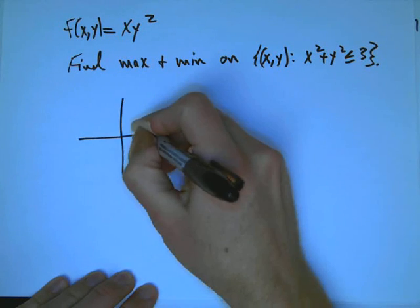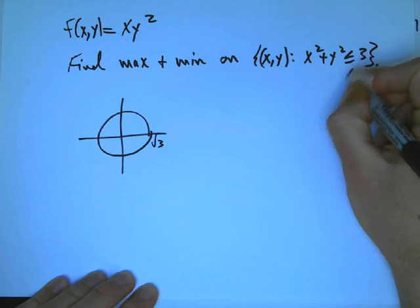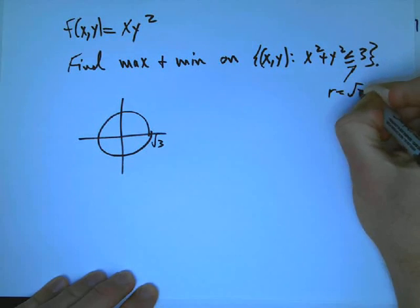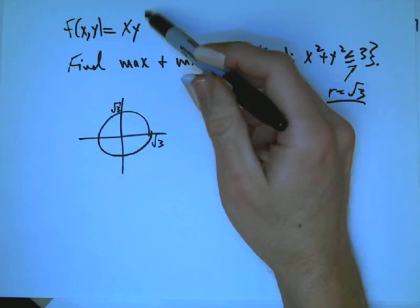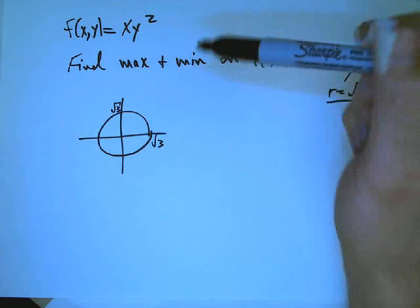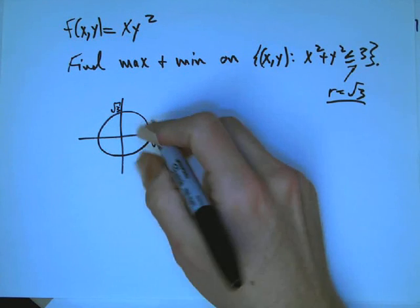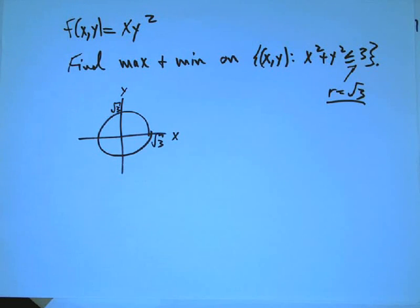So here's our region. That's a circle of radius root 3. And I want to look at where this is biggest and smallest. And, again, notice I'm drawing just the 2D picture. I'm not trying to graph this.